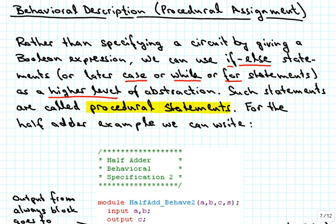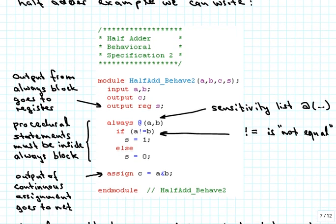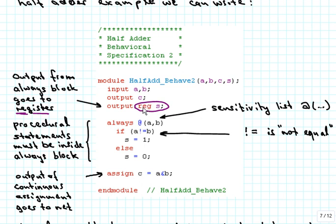For the half adder, we can now write our Verilog code in a new way. We start with the keyword module and give it the name half_add_behave2, because it's the second version of a behavioral description of that half adder. We need to declare the inputs and outputs — the port directions. You'll notice something new: for the output C (carry), it remains the same, but for the output S, we have added the keyword register. So that's no longer a continuous assignment; it's something that gets stored in a memory location and gets updated only when something happens that requires such an update, and in between it's just being read out from that memory.